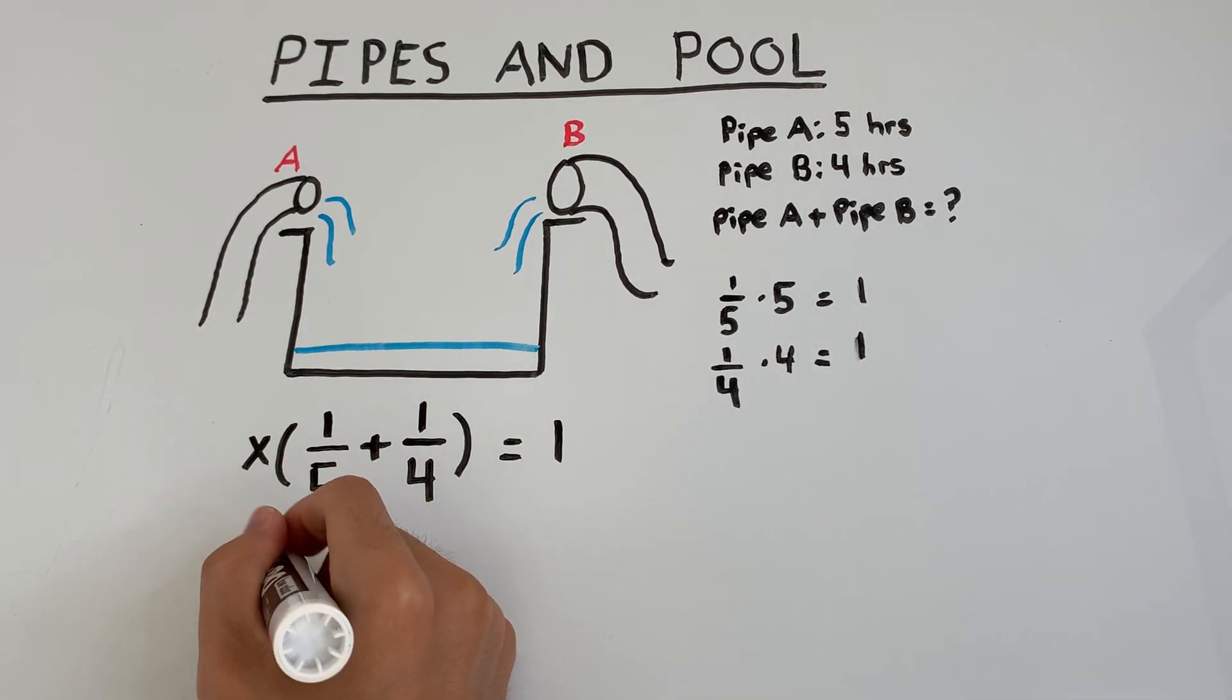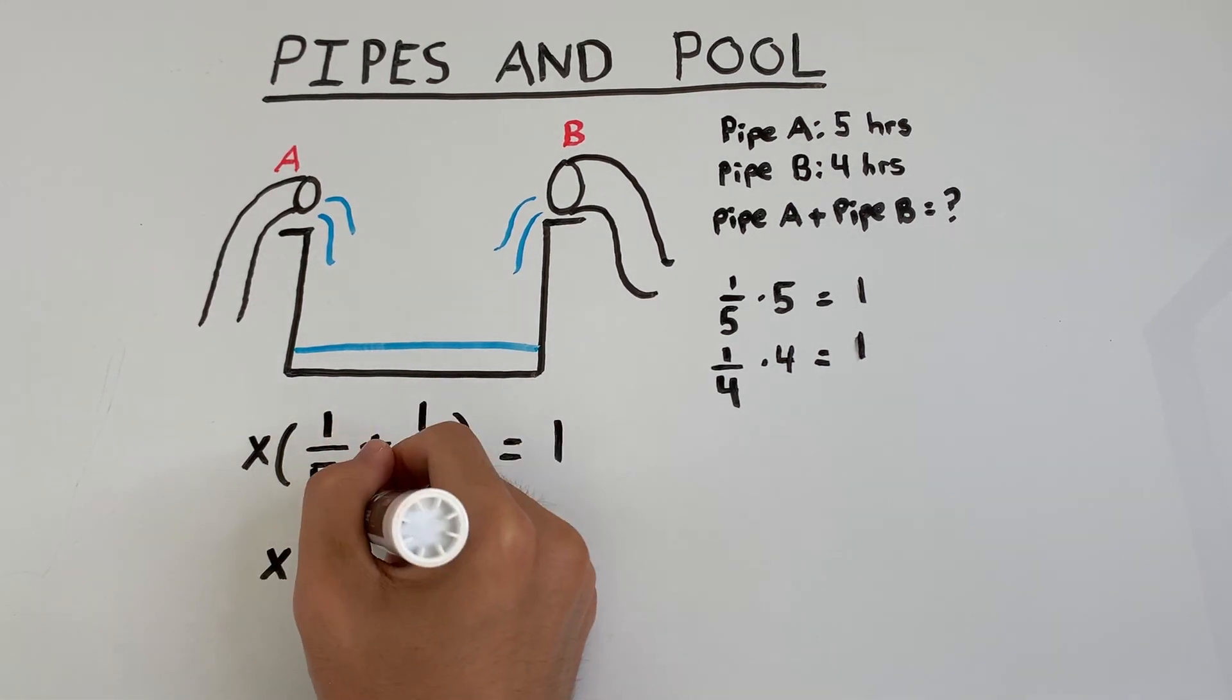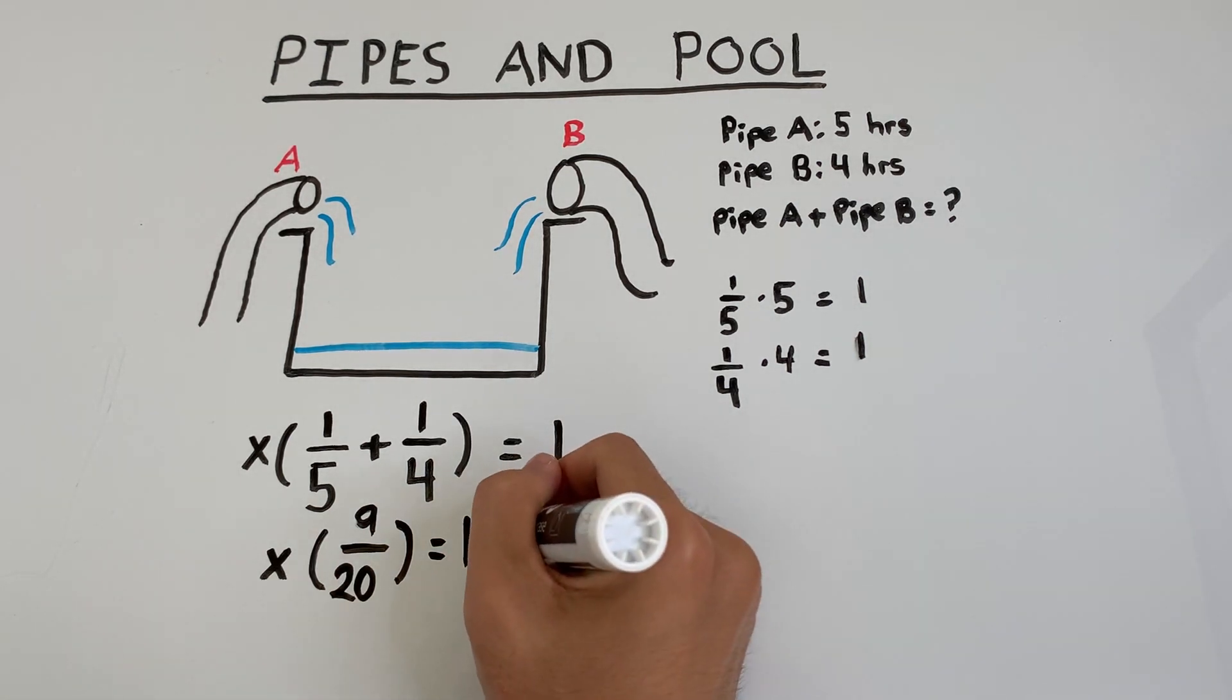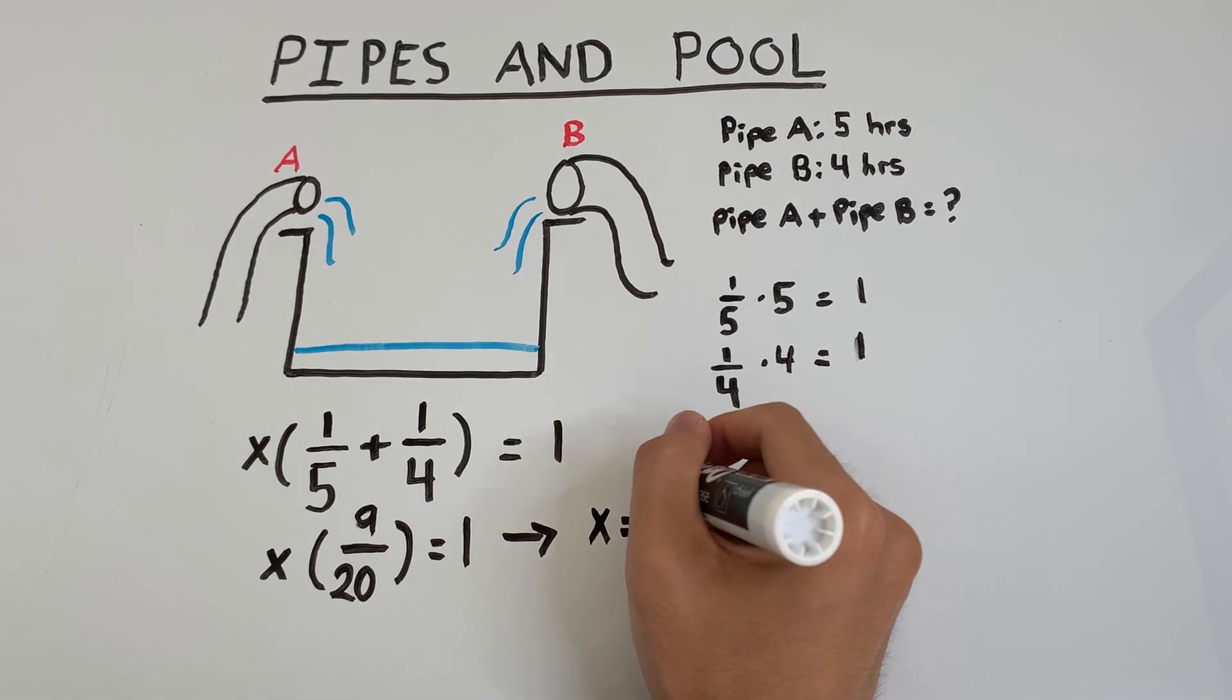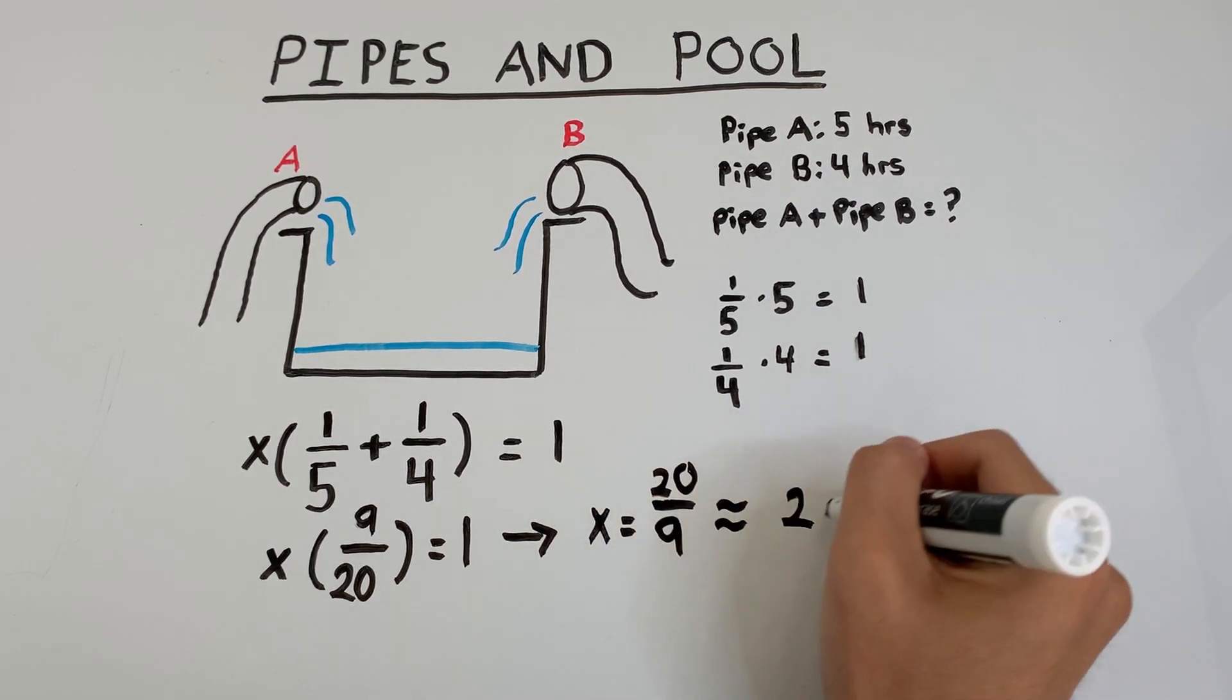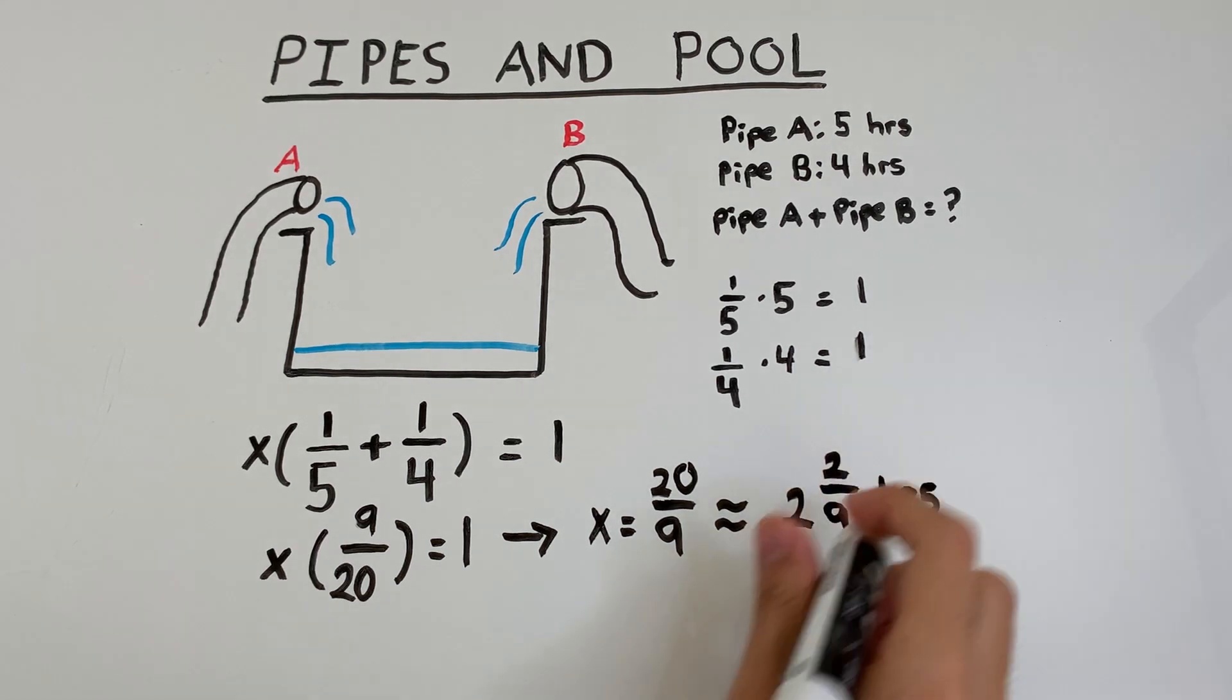So when we solve, we can simplify this expression inside to be equal to 9 over 20, and of course that's equal to 1. So then we see that X is actually equal to 20 over 9, which is approximately 2 and 2 ninths hours, which is around 2 hours and 13 minutes.